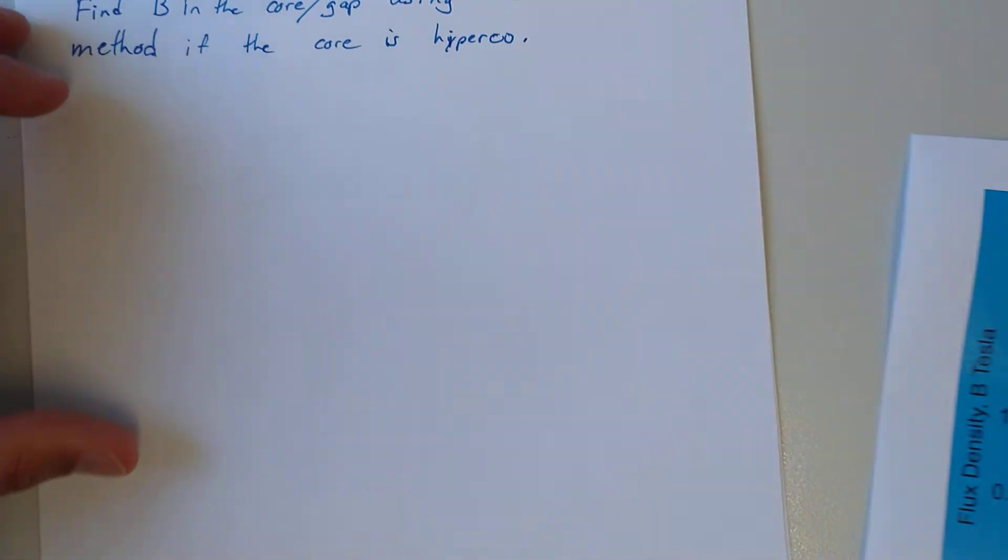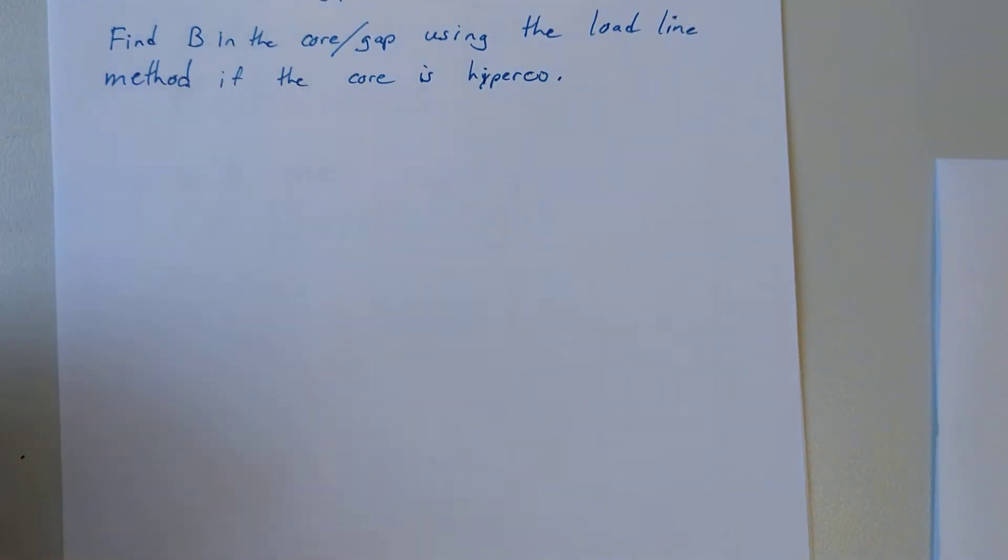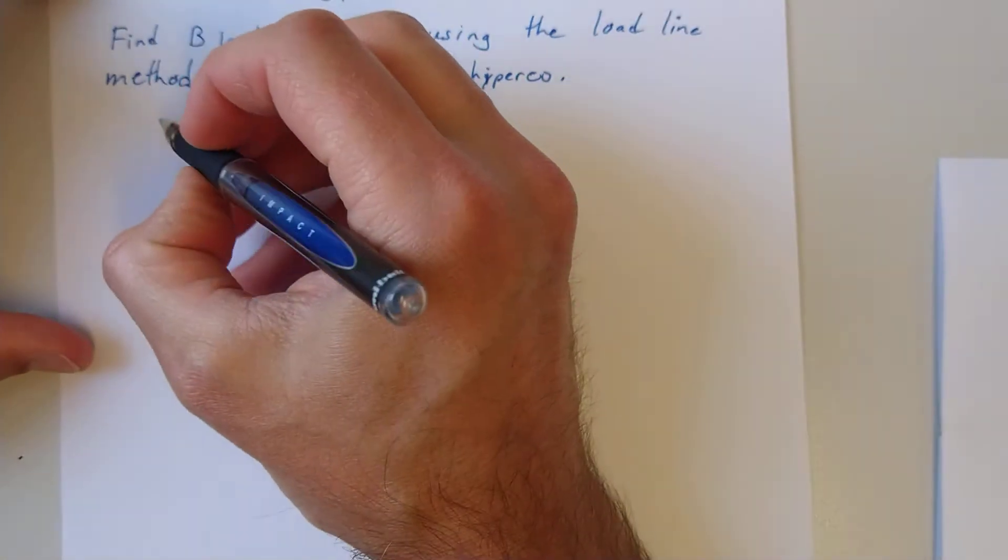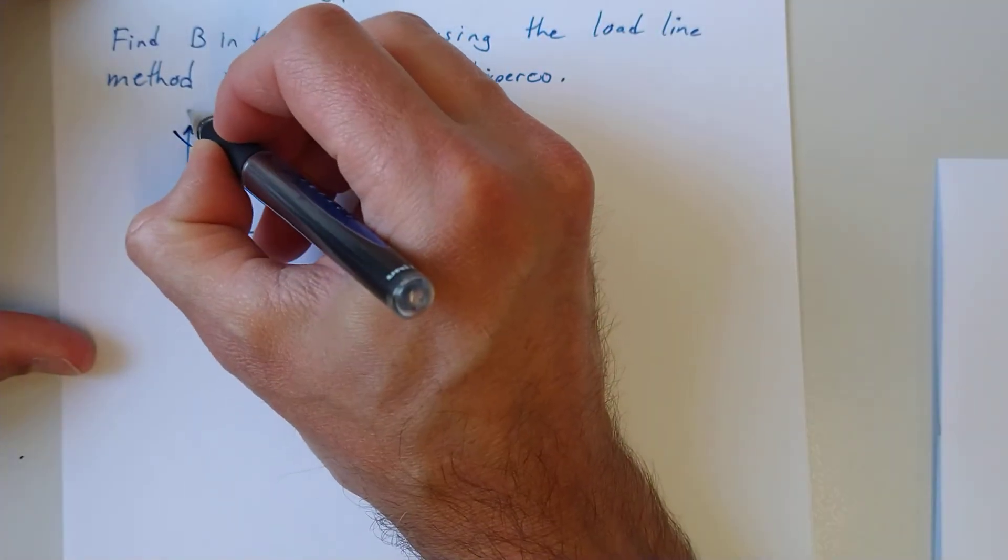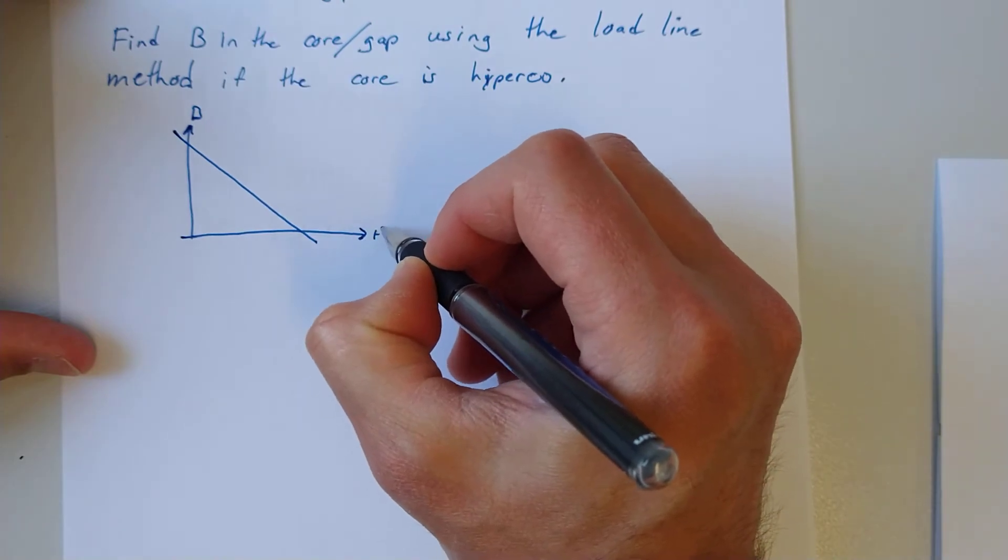So some formulas from the last equation were... here's our load line defined by its intercepts. There's B and H.